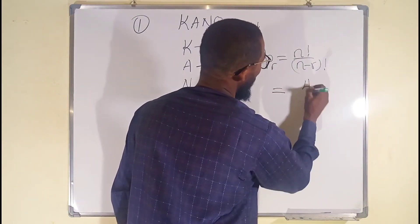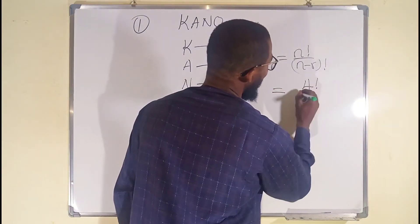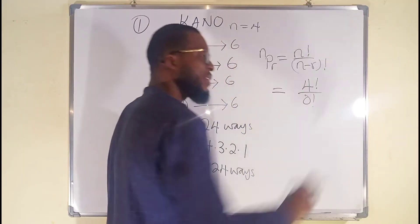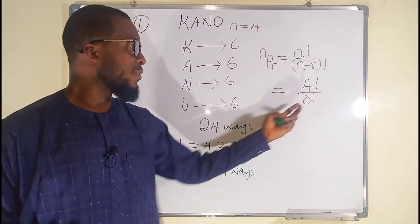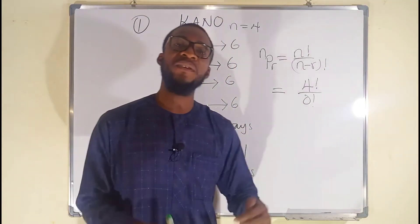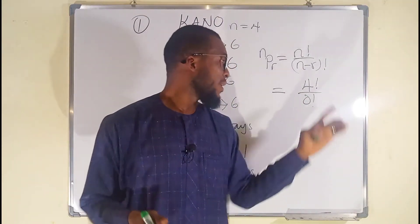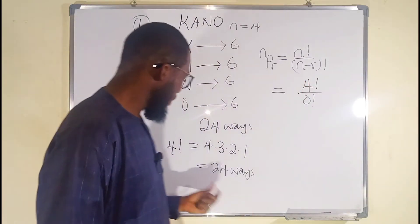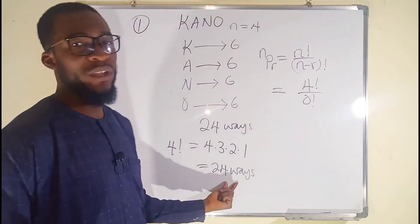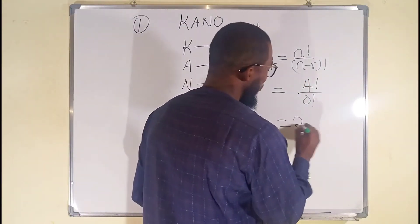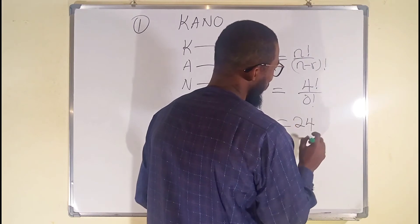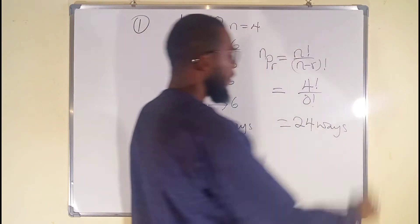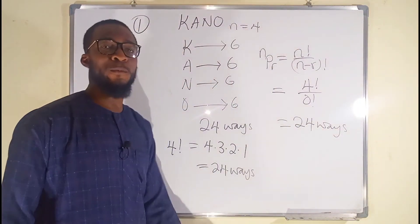Therefore, this is equal to 4 factorial divided by (4 minus 4), which is 0 factorial. 0 factorial is equal to 1. So 4 factorial divided by 1 is still 4 factorial, and 4 factorial is 24. This is also 24. So no matter which method you use, you have to get the same value: 24.